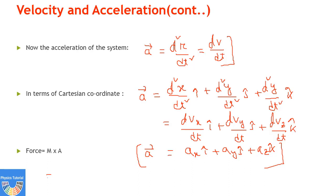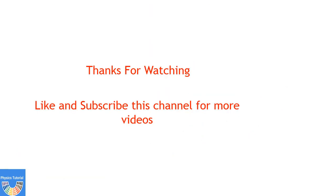Force can be written as F = m × d²r/dt², which can also be written as m × dv/dt. These examples show how velocity, force, and acceleration can be expressed using vector differentiation. Thanks for watching — please like and subscribe to the channel for more updates.